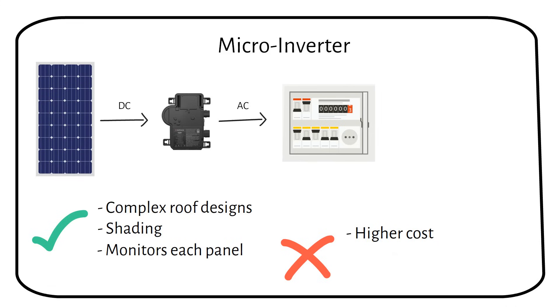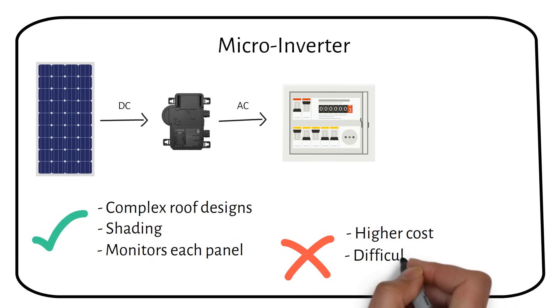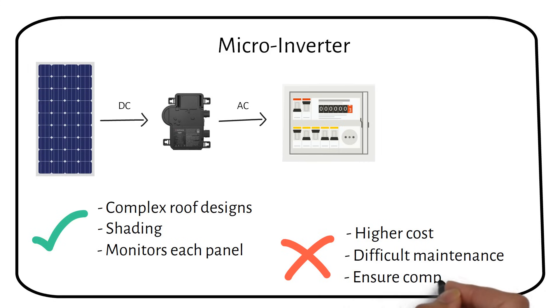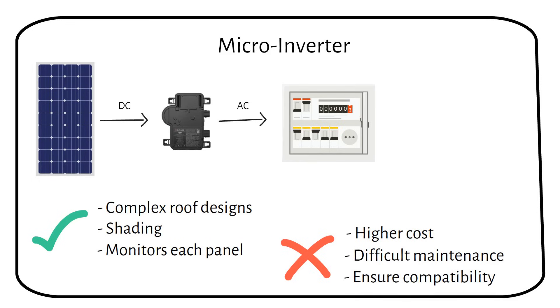In the event of a malfunction, replacing a micro inverter can be more challenging due to its location behind the solar panel. Furthermore, when selecting micro inverters it's crucial to ensure compatibility with your specific solar panel, as not all micro inverters work with every panel. Despite these considerations, micro inverters offer a solution for optimizing solar energy, particularly in environments where shading and roof orientation could limit system efficiency.